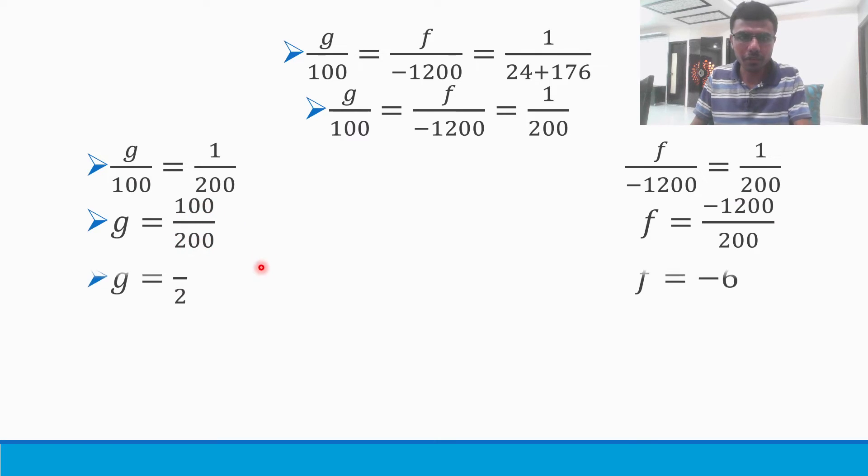Two zeros cancel. g is 1/2. And f would be -1200/200 which is -6. So I get g = 1/2 and f = -6.